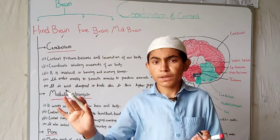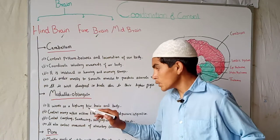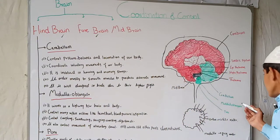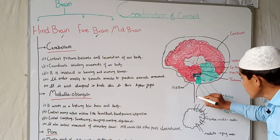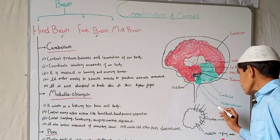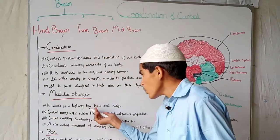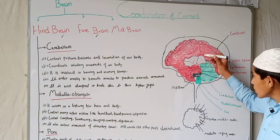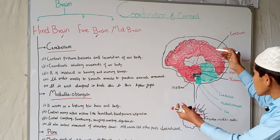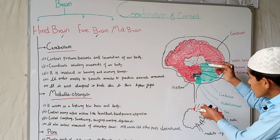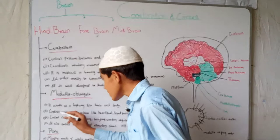The next part of the hindbrain is the medulla oblongata. It is located on the border between the brain and the spinal cord. It works as a highway between the brain and the body — impulses coming from the lower body or spinal cord travel up to the brain, and impulses from the brain travel down toward the spinal cord.